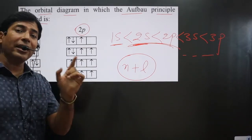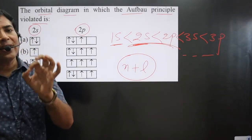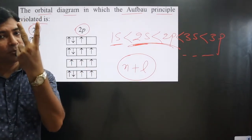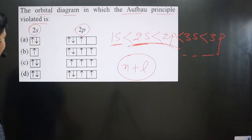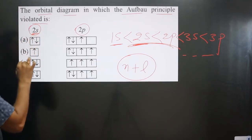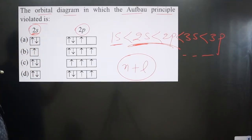And always keep in mind, an orbital in a subshell can hold maximum 2 electrons. So you can see, in 2s orbital, it can hold maximum how many electrons? 2 electrons.